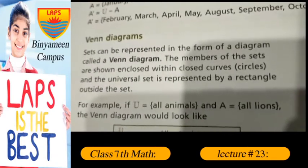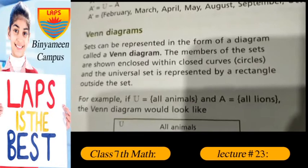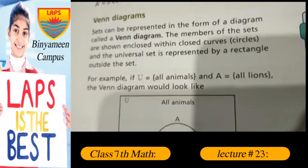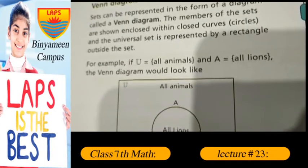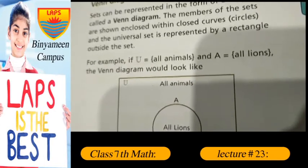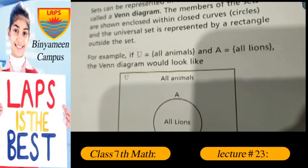Venn diagram: sets can be represented in the form of a diagram called a Venn diagram. The members of a set are shown enclosed within the closed curved circle, and the universal set is represented by a rectangle.